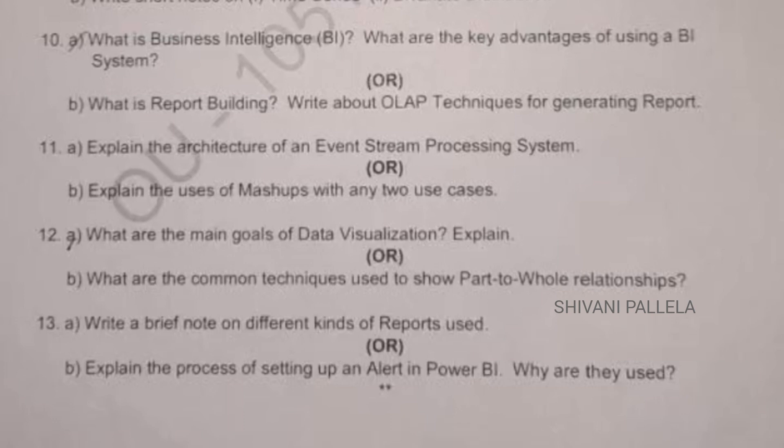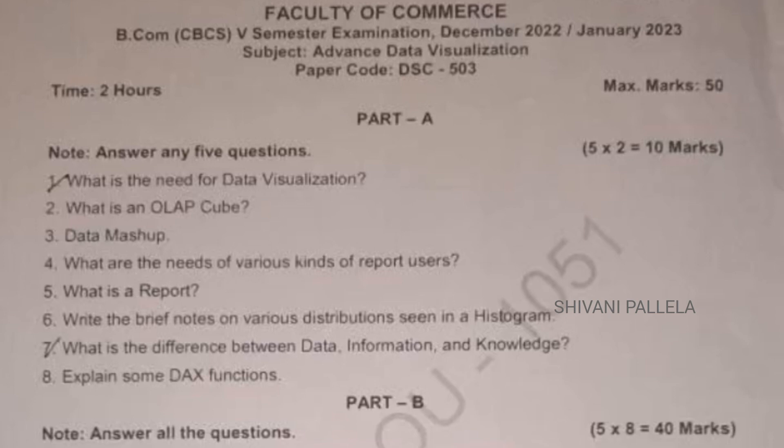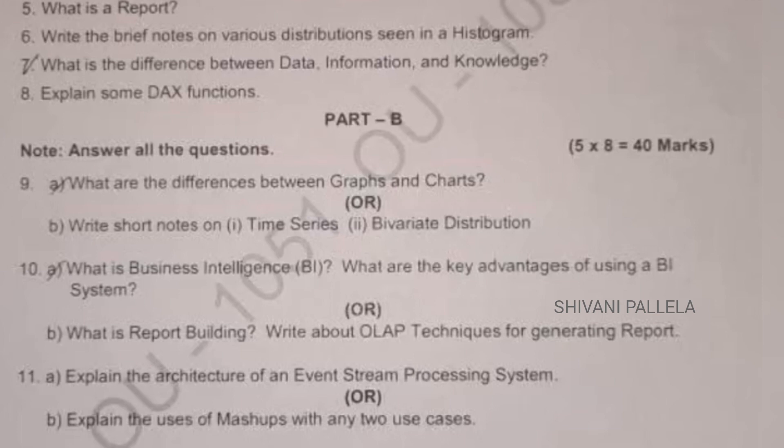The main important questions are: what are the goals of data visualization — this is an important question from unit four — and what is data mashup, what is the need of data visualization, and what is meant by data visualization. For short questions, five to six sentences is more than enough for two marks. For long questions of eight marks, a minimum of two sides of a page is important.